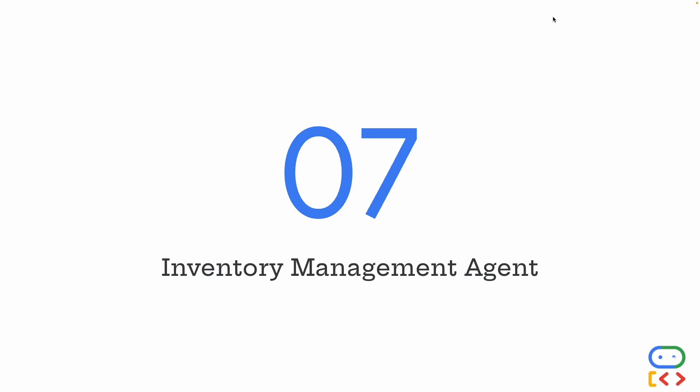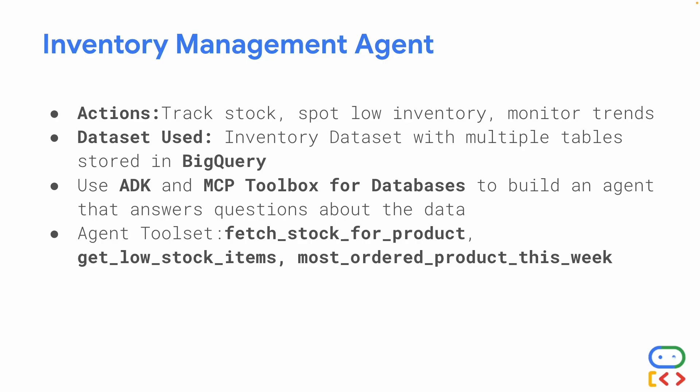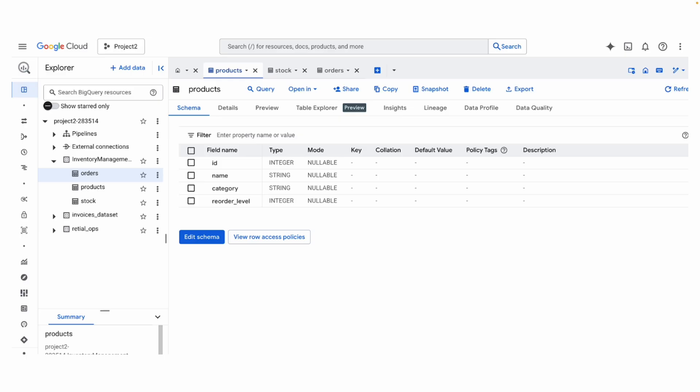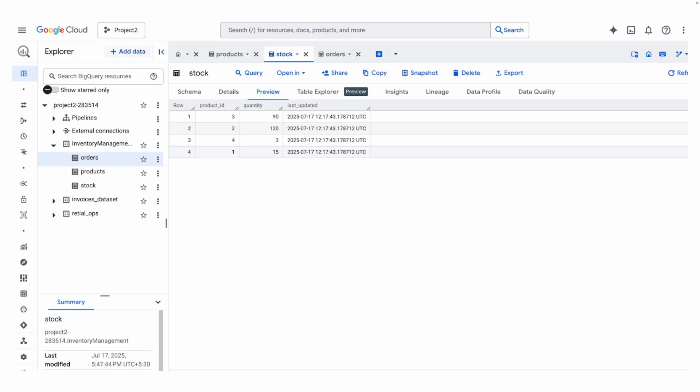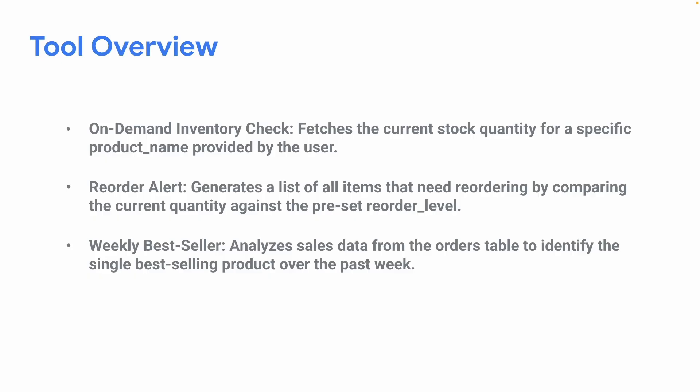Now we move to the second hands-on AI agent: the inventory management agent. The actions to perform are track stock, spot low inventory, and monitor trends. The dataset is one main BigQuery dataset with multiple tables. The agent toolset consists of: fetch stock for a product, get the low stock items, and find the most ordered product this week. The dataset includes a products table with product details, a stock table with current quantities, and an orders table tracking all sales.